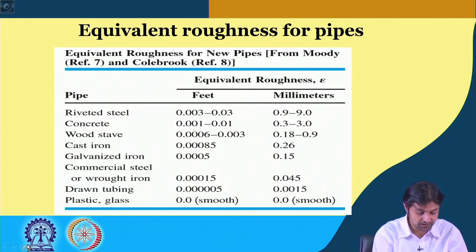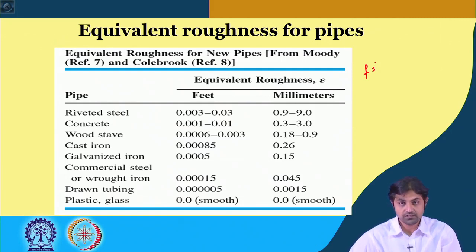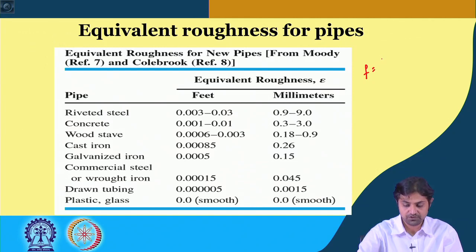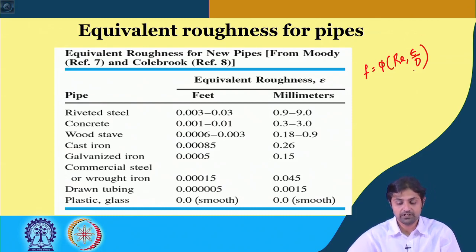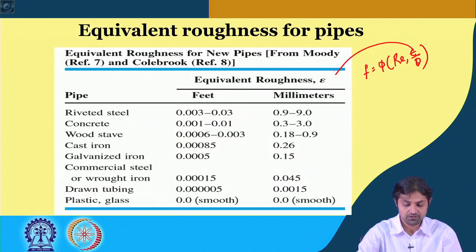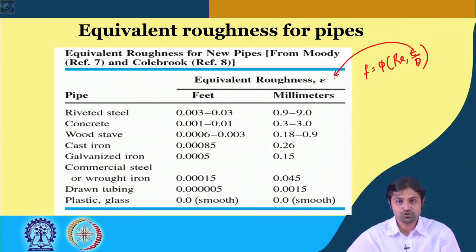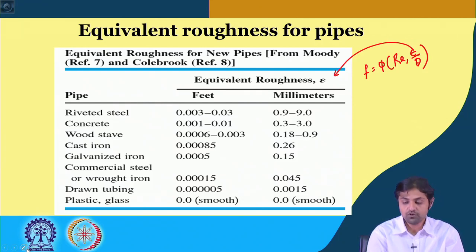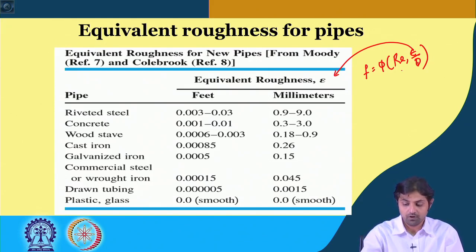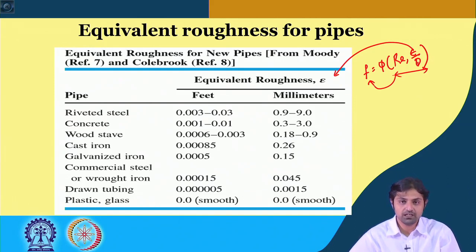Until this point, what are the things that we know? We need to find F, the Darcy-Weisbach friction factor: F is equal to a function of Reynolds number and ε/D. Reynolds number we can calculate if the flow and pipe diameter D are given. Epsilon we can find through tables, and most cases for numerical problems you will be given the value of ε/D directly. If we know ε/D and Reynolds number, the friction factor F depends on both these parameters, and knowing F allows us to calculate the major head loss.